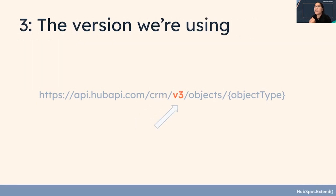The third thing we're looking at is the version we're using. For this example, we're using v3. We do have v1, but I recommend updating to v3 endpoints as they are the newer, most up-to-date ones.